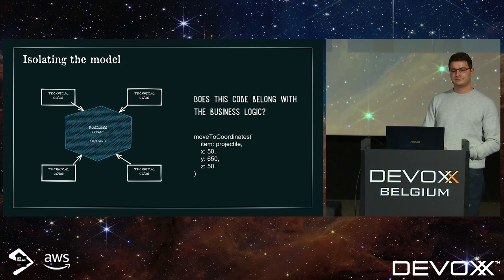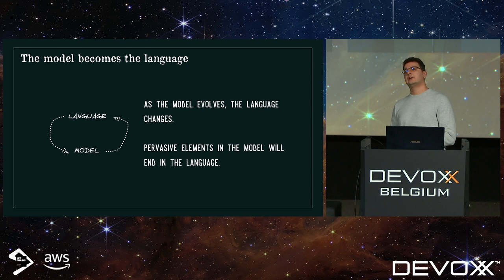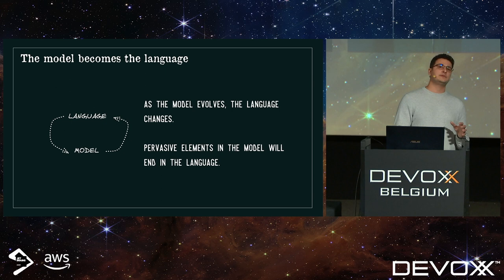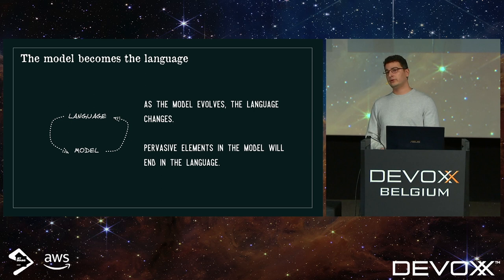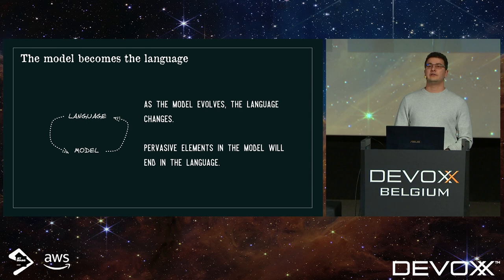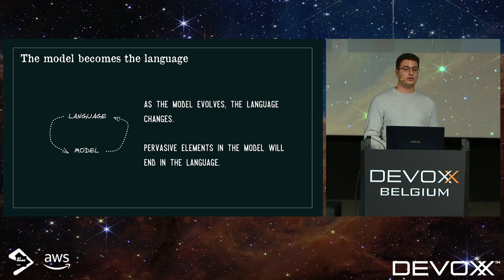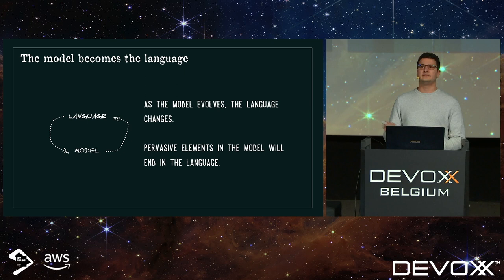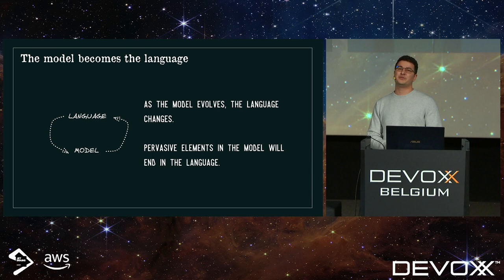What we need to understand is that as language became our model, eventually it goes both ways — as the model evolves, the language will change. Here, we've left concepts linked to 3D spaces in our model. Developers will use them, talk in terms of coordinates, and eventually this contaminates the language of domain experts. One day you hear a gunner say 'bring the projectile to coordinates 50, 650, and 50' instead of 'lower the projectile down the bore.' That's when you know you've failed.